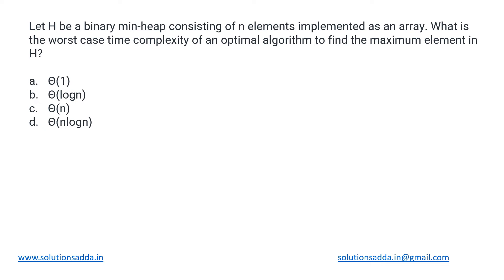This is a DSA question on heap data structure. We have H which is a binary min-heap consisting of n elements implemented as an array. We need to determine what is the worst case time complexity for performing an optimal algorithm that finds the maximum element in this heap. So now H is a min-heap and in this min-heap we need to find out the maximum element. If it were the minimum element, then it would be the first index. We could have directly got it in order of one time, but this is a min-heap.